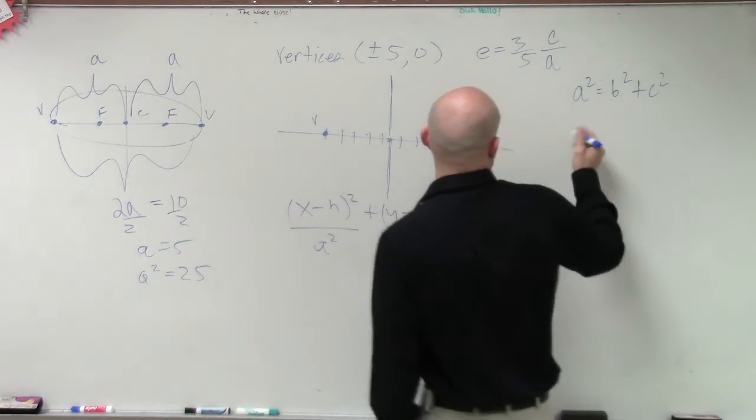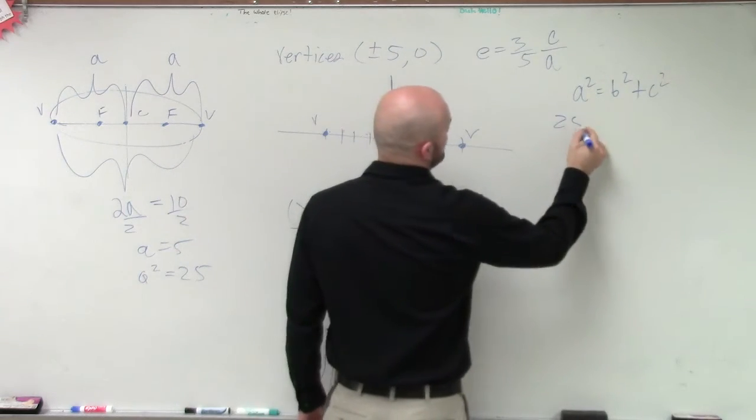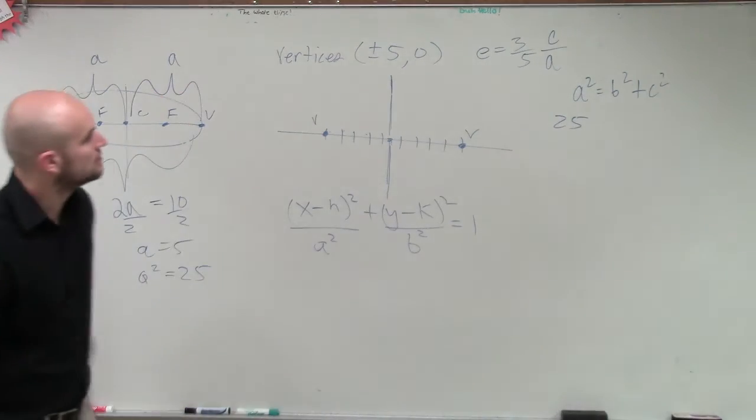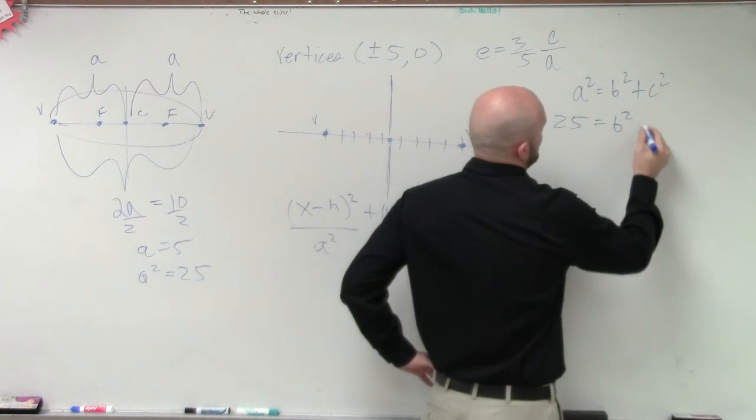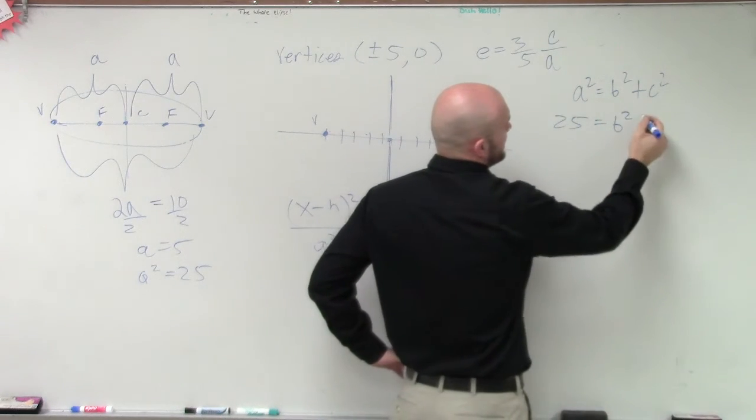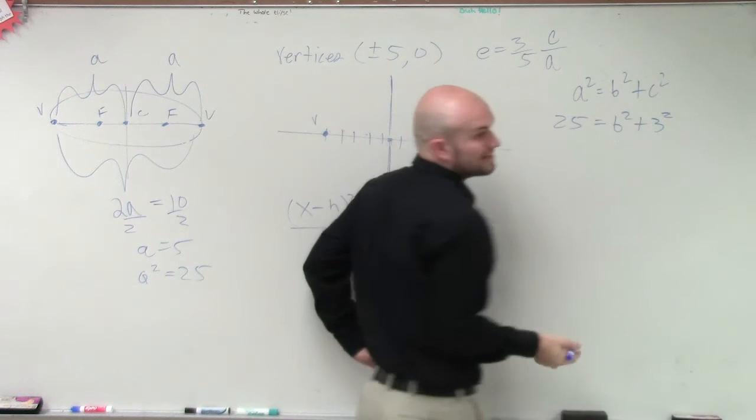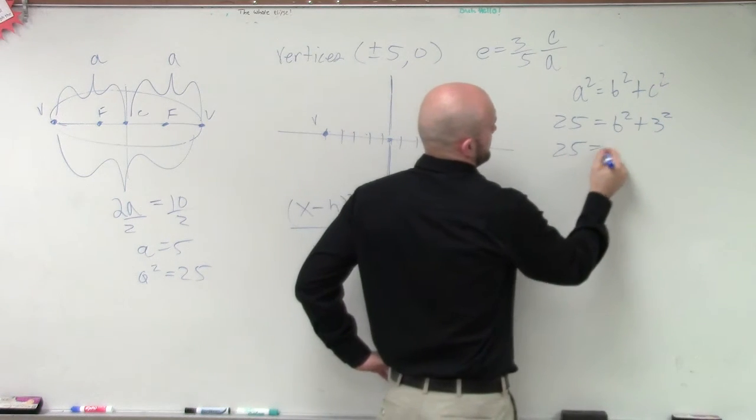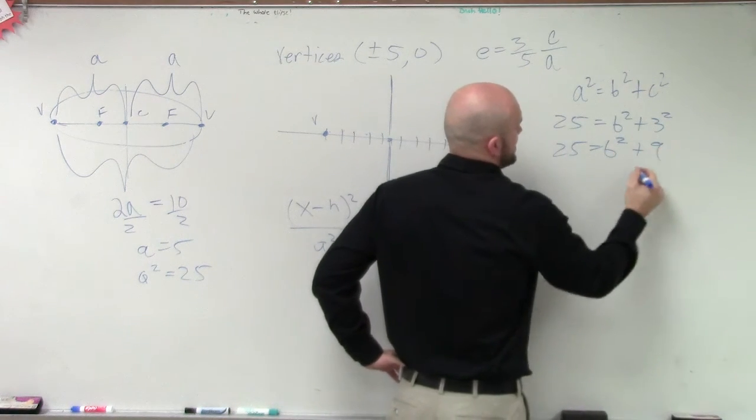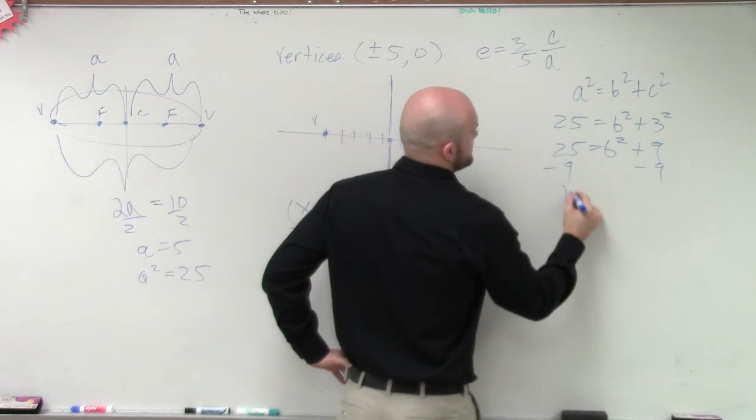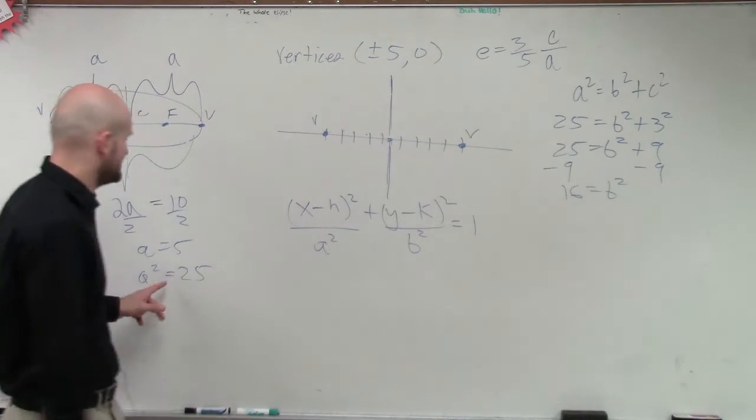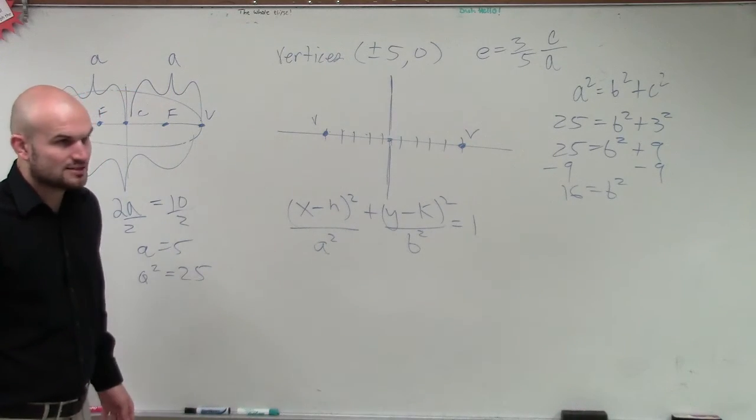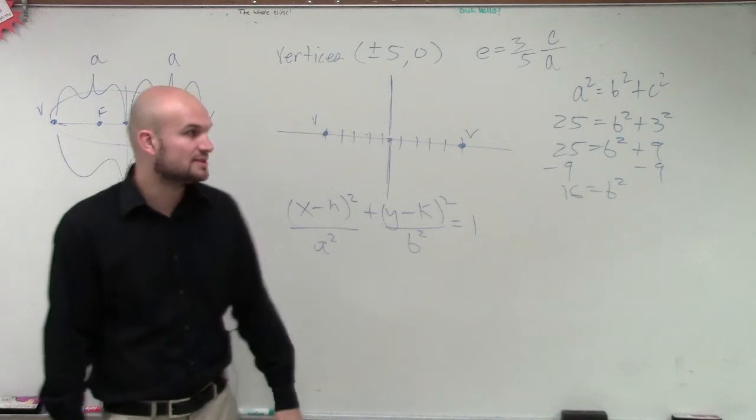So therefore, we know a is 25. Now, we don't know what b is, though. But we know c is going to be 3 squared, which is 9. So now we subtract 9. 16 equals b squared. Now, you can figure out what b is, but you don't have to. We just need to, we really just care about what b is, or what a squared and what b squared are.